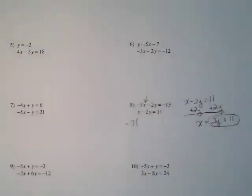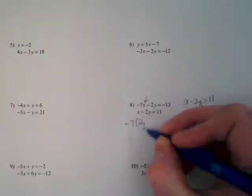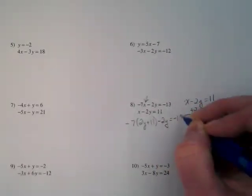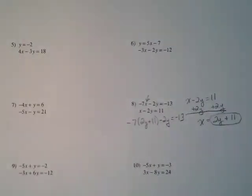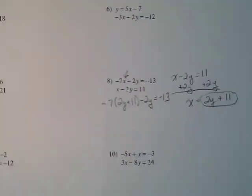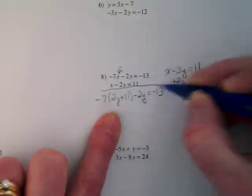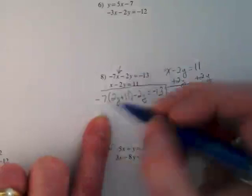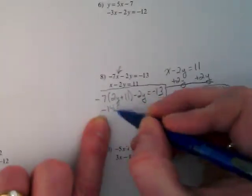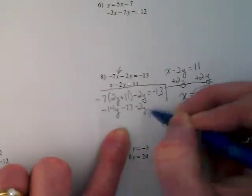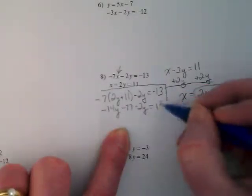So negative 7 times 2y plus 11 minus 2y is equal to negative 13. I don't know with how big I write if I'm going to have enough room to solve all of this on this piece of paper. I have to distribute first. I'm going to put a little box around this to keep it separate. So this is going to become negative 14y minus 77 minus 2y equals negative 13. I started writing that without the negative.